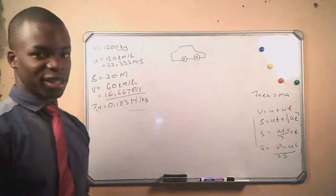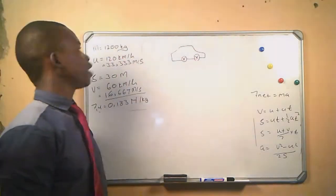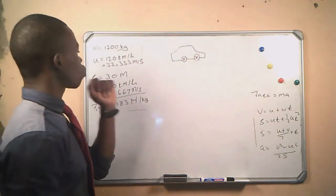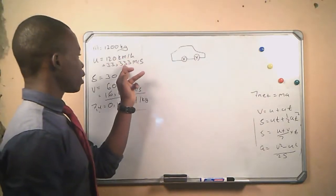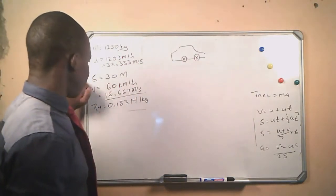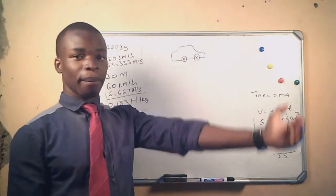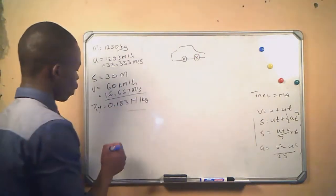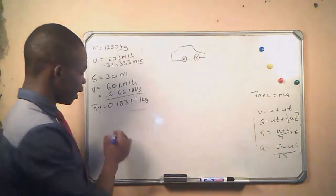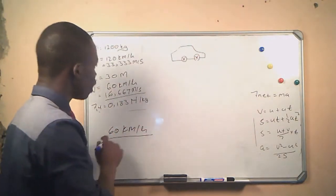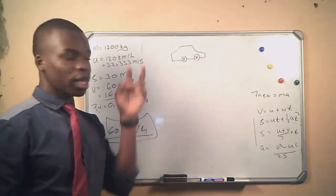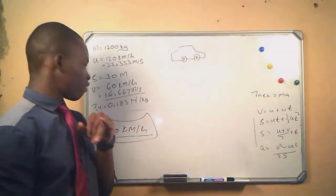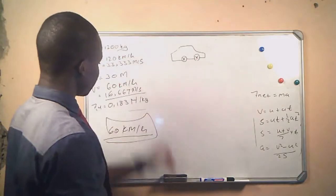Here is the information we are given. The mass of the car is 1,200 kg. The initial speed is 120 kilometers per hour, which is 33.333 meters per second. The distance is 30 meters — the driver sees a speed trap 30 meters away. The final velocity is 60 kilometers per hour, which is 16.667 meters per second. We are also given the frictional force of 0.183 newtons per kg.